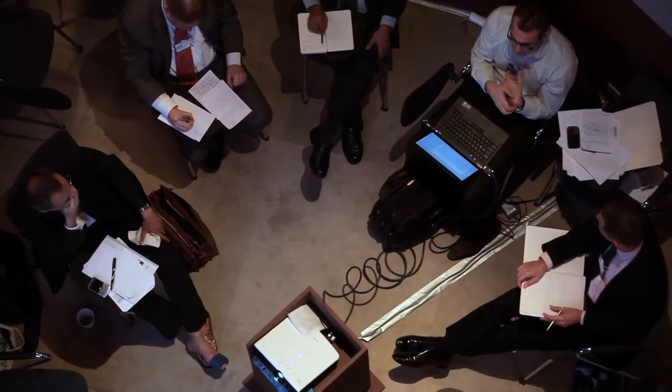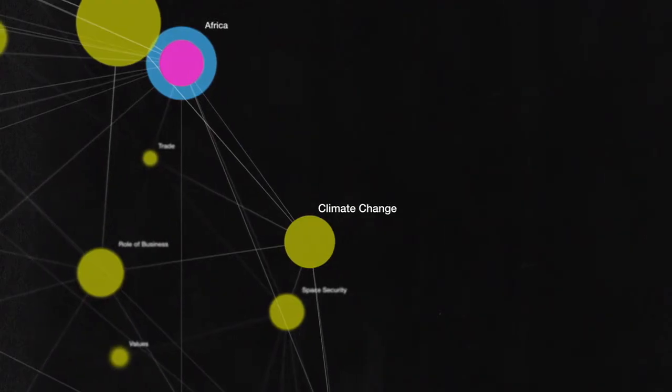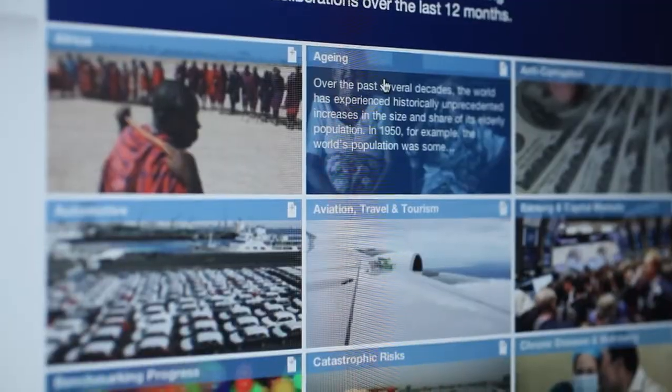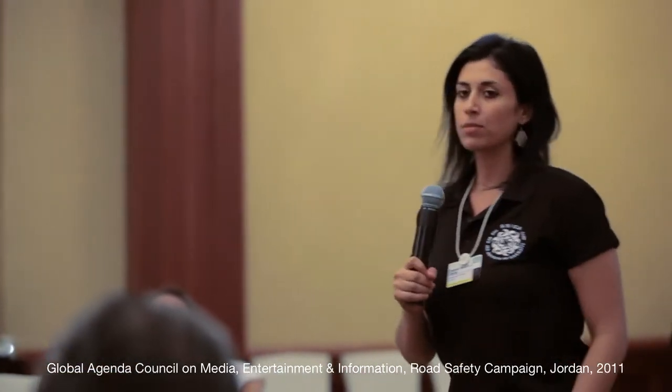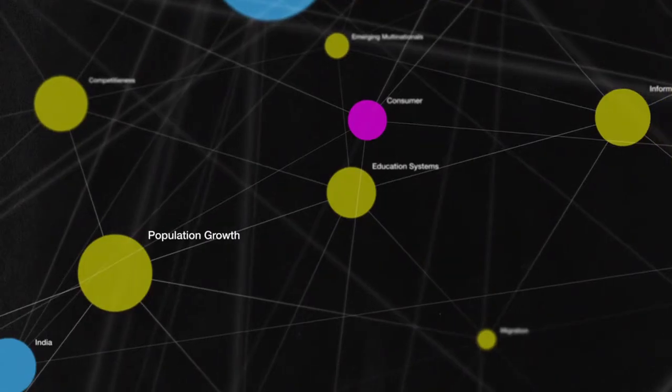One of the things that makes this work as a brainstorming exercise is that every Agenda Council finds its own way of working, and every one of them is actually producing a very different kind of output. Some are producing programs for activism, some are producing very intellectual ideas with footnotes. Each is coming up with a new way of coming at the problem, but they're very different and non-prescriptive.